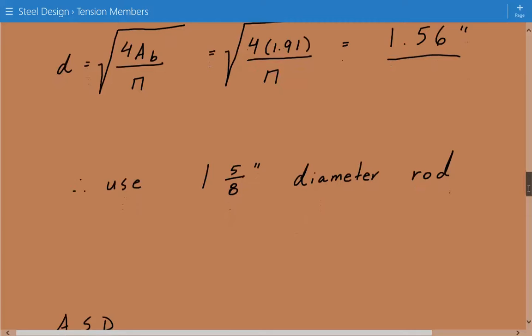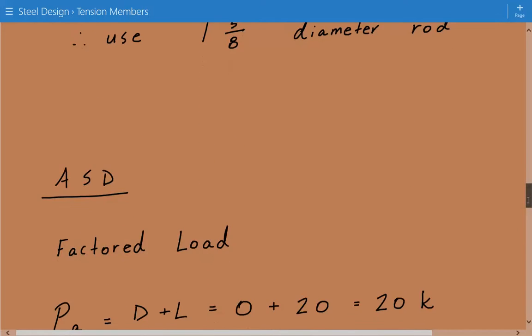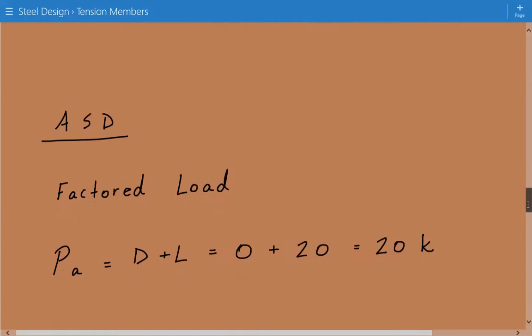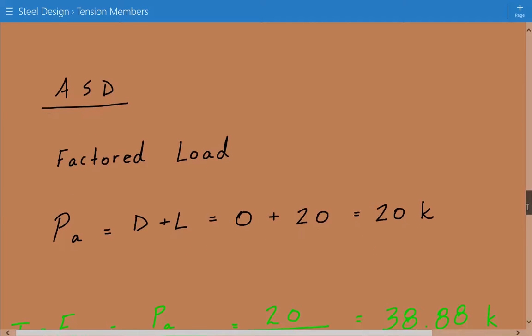That's the end of the LRFD approach. Now we're going to do the ASD approach. So again, we have to calculate the factored load, and load combination number two will govern based on ASCE7 load combinations.